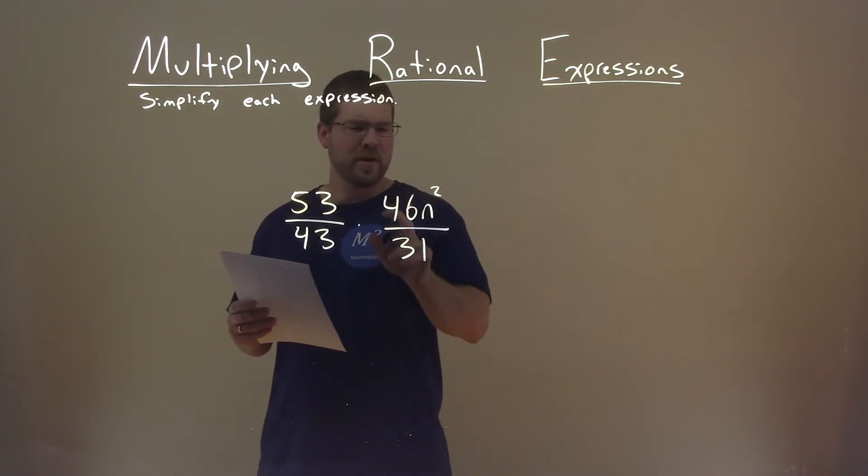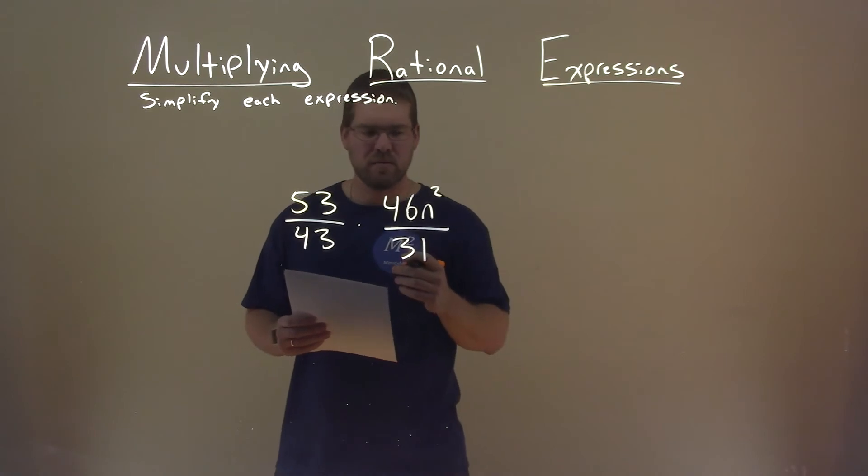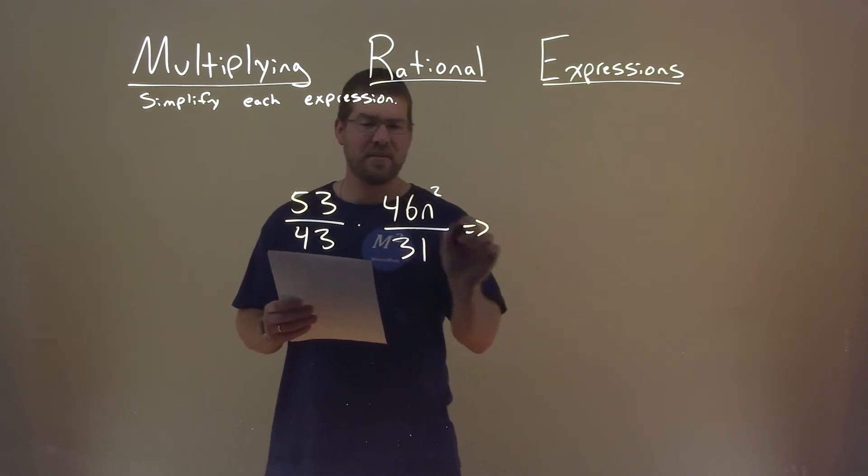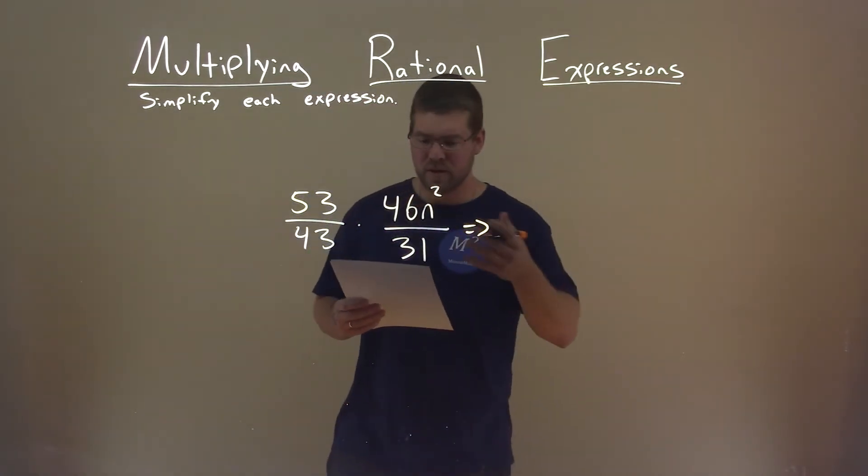And 46, well, 31 doesn't go into 46 evenly, and neither does 43. So we actually just have to multiply across the numerator and across the denominator.